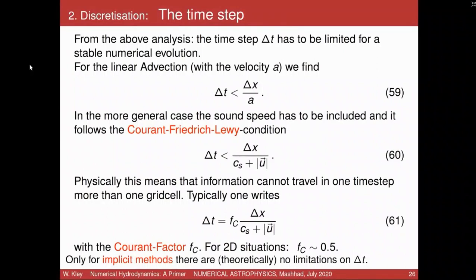From these considerations, we see that we cannot solve our hydrodynamic equations with an explicit method using any time step — we have limitations. From the advection part, the time step must be smaller than delta_x/U. This means in one time step the fluid cannot cover more than one grid cell in size. You cannot transport mass in one time step over 10 grid cells. This is physically intuitive, and interestingly the mathematical analysis confirms it.